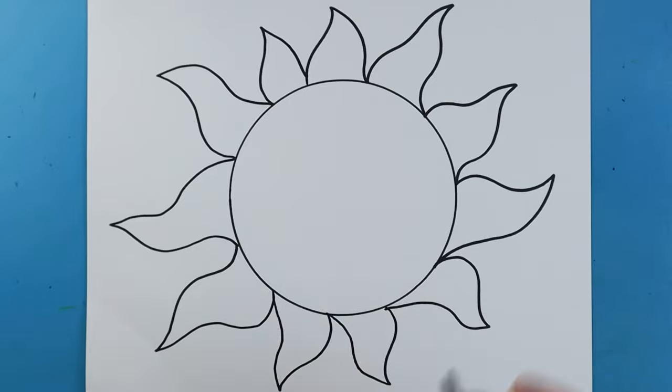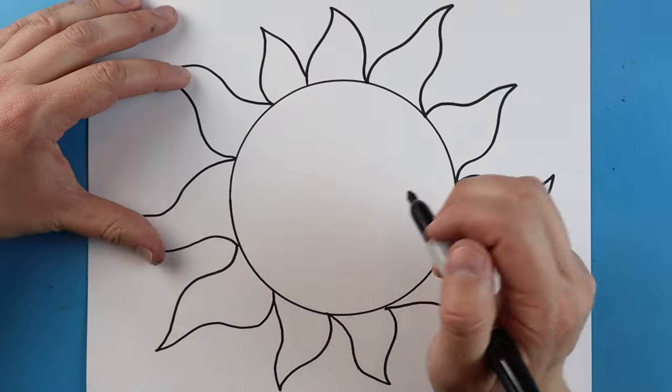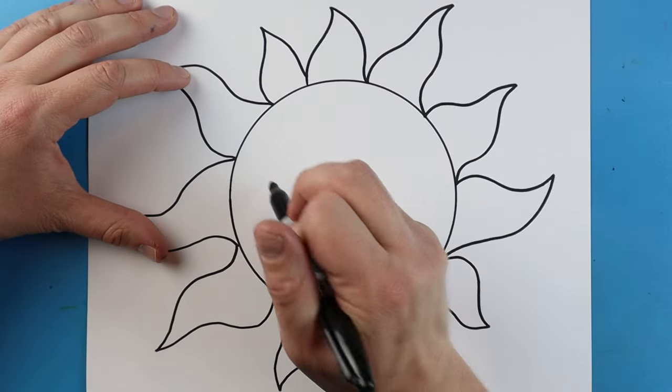Now that I have my sun all drawn out, what I want to do is add a little face on here. And I'm just going to make some sunglasses on my sun.